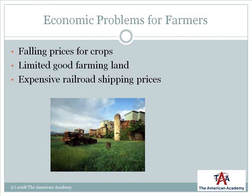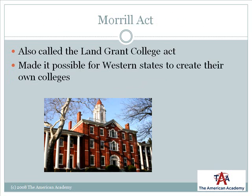Moreover, the railroads were taking advantage of farmers by charging excessive prices for shipping and storage. In 1862, the Morrill Act was passed, giving each state 30,000 acres of land for each senator and each representative. The land was to be sold and the profit used to establish state colleges. Because of this act, thousands of people have been able to receive college educations.